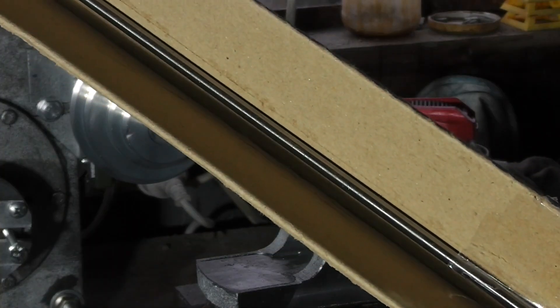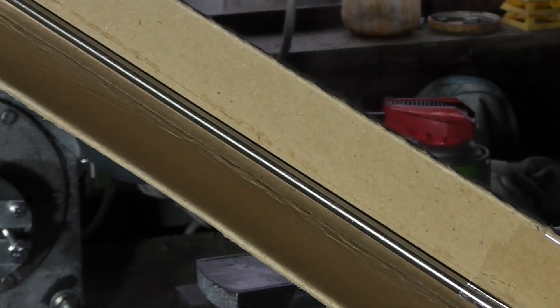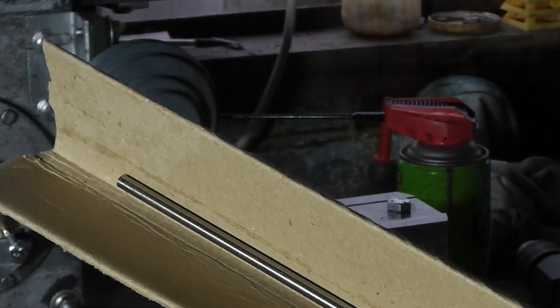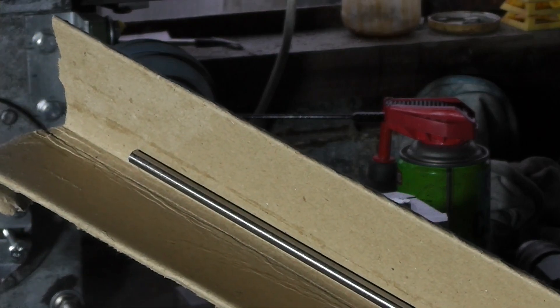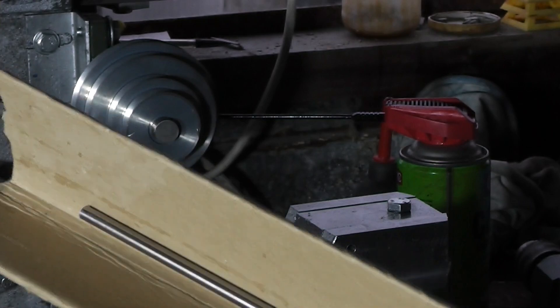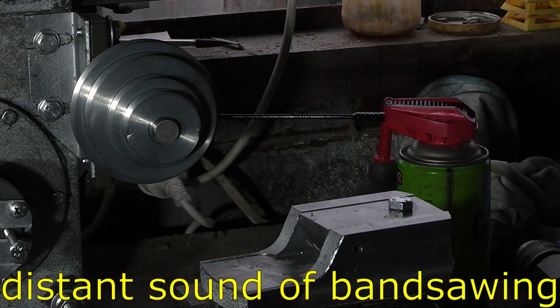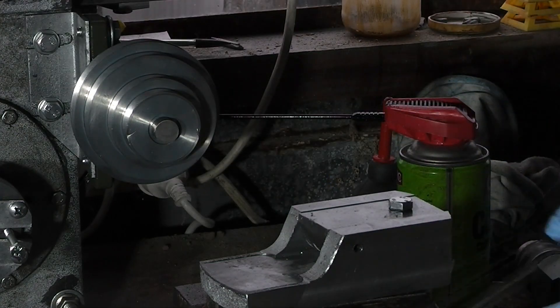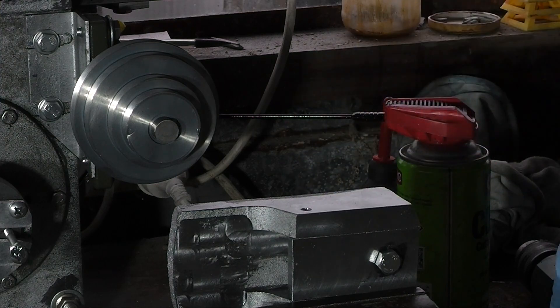This is 5mm silver steel or what the Americans call drill rod. So it should be pretty accurately dimensioned. I have no idea why but it comes in 900mm lengths. A bit of deburring. I think I may have to cut a longer piece and make a debit reamer.